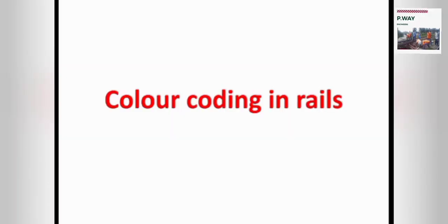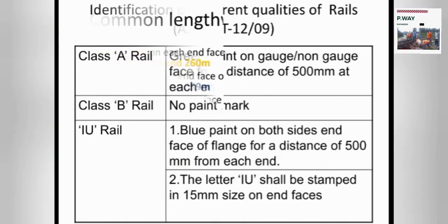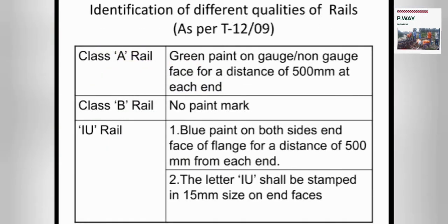According to the Indian Railway Permanent Way Manual, that is IRPWM, various colors are used in rails. These color codes are used for identification of different qualities of rails. Let's see them one by one.